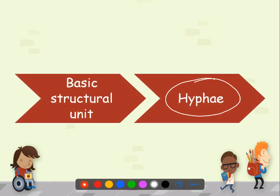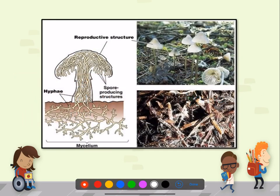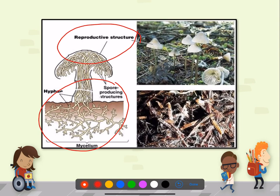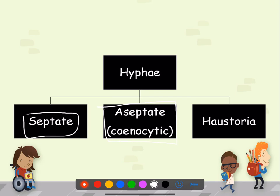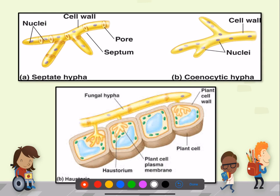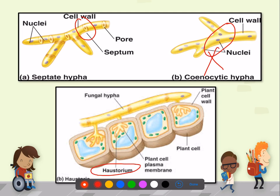Hyphae is the basic structural unit of fungi. You can see the structure of fungi with the mycelium and hyphae, and this is the reproductive structure. Hyphae are classified into three types: septate hyphae, aseptate hyphae or coenocytic hyphae, and haustoria hyphae. In septate hyphae you can see the septum, whereas in aseptate or coenocytic hyphae the septum is absent.